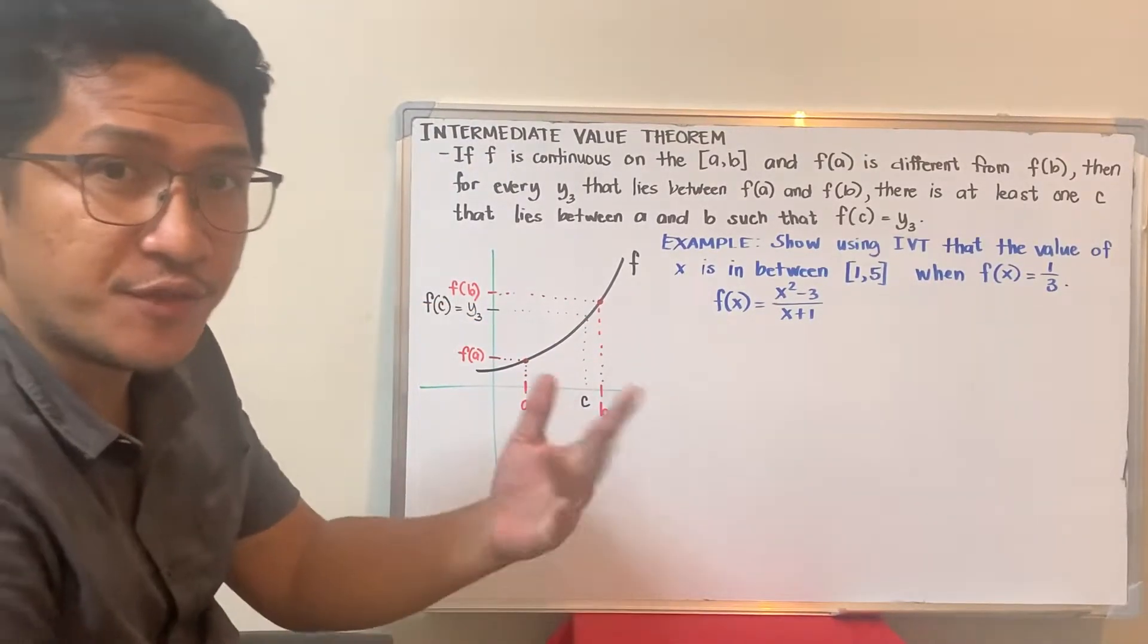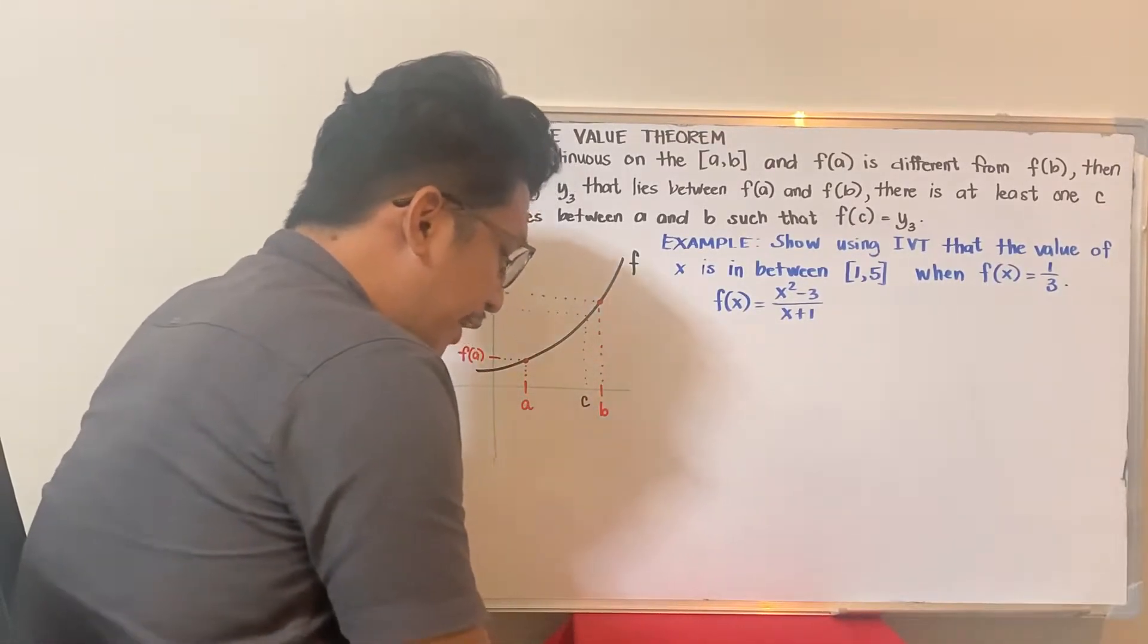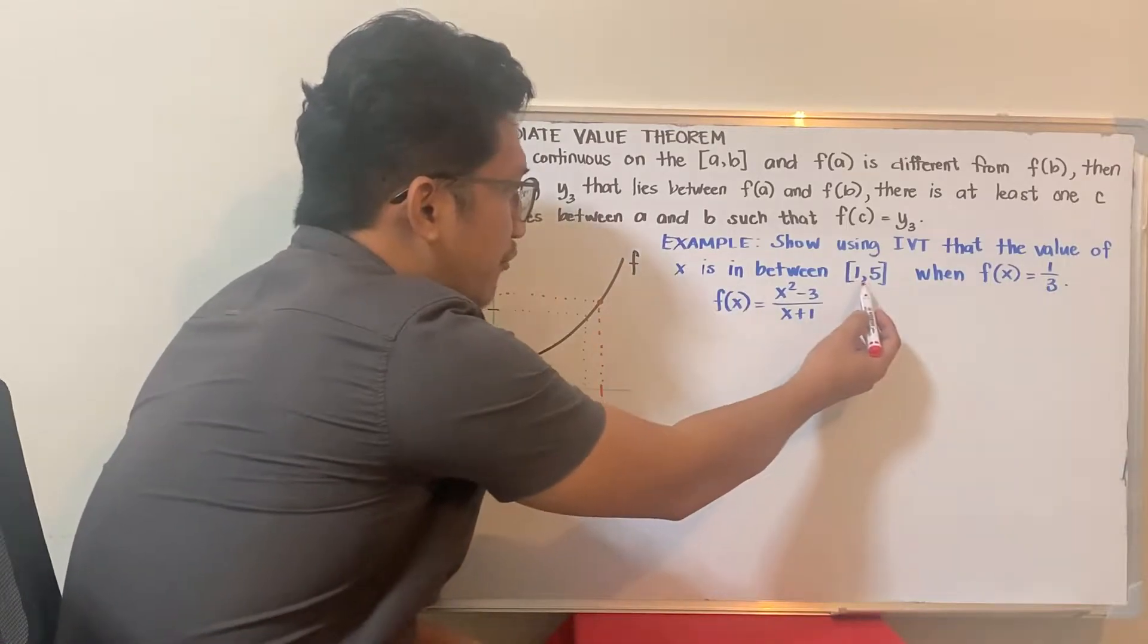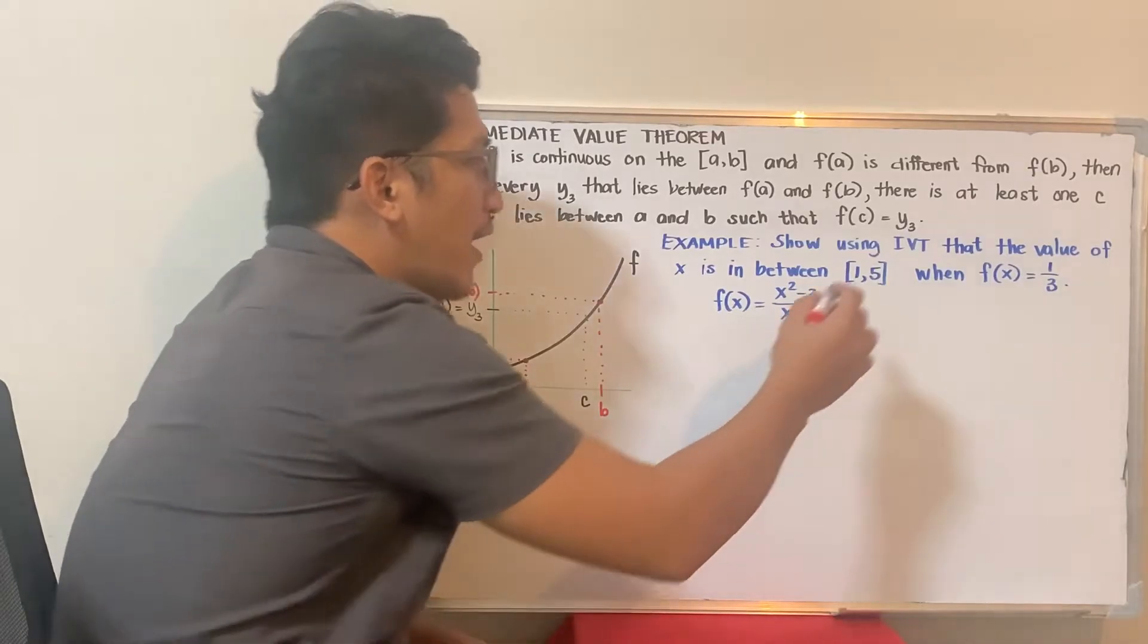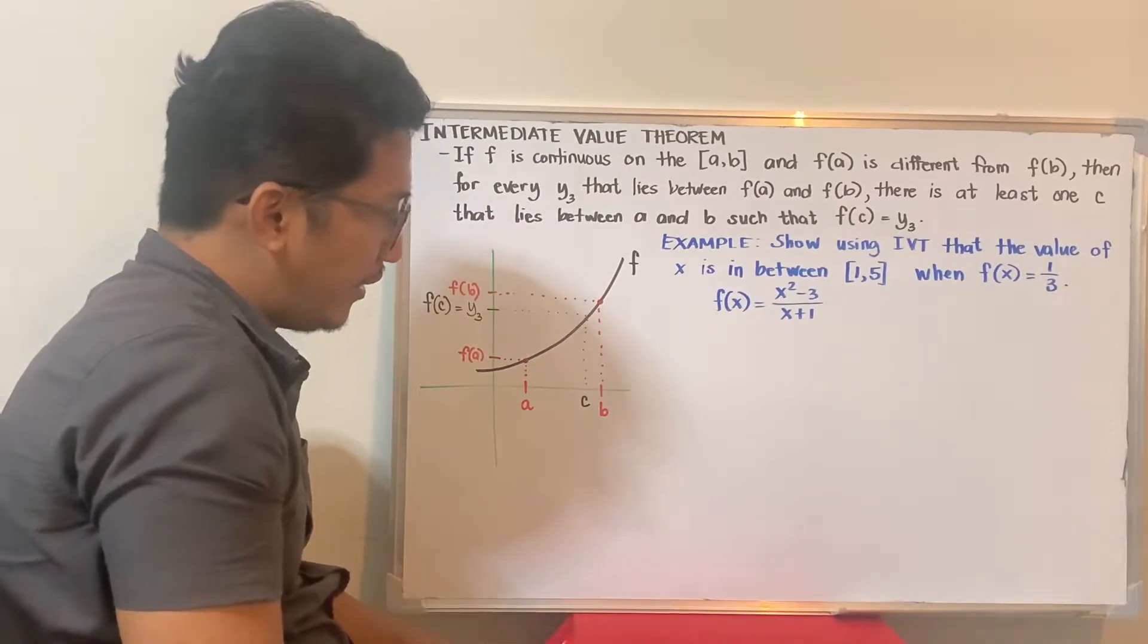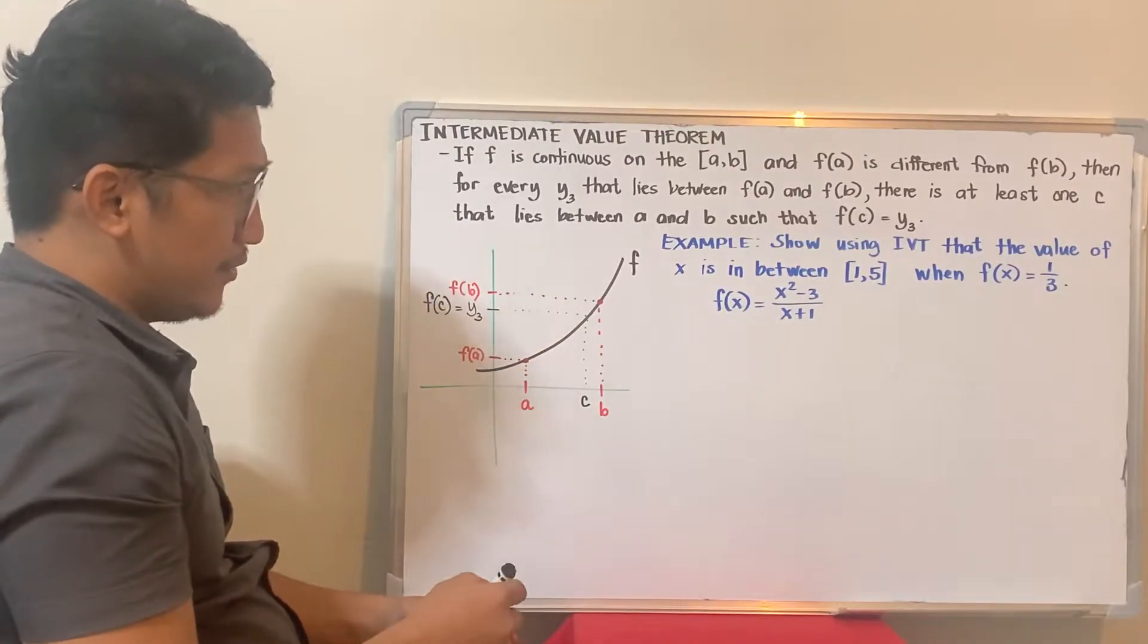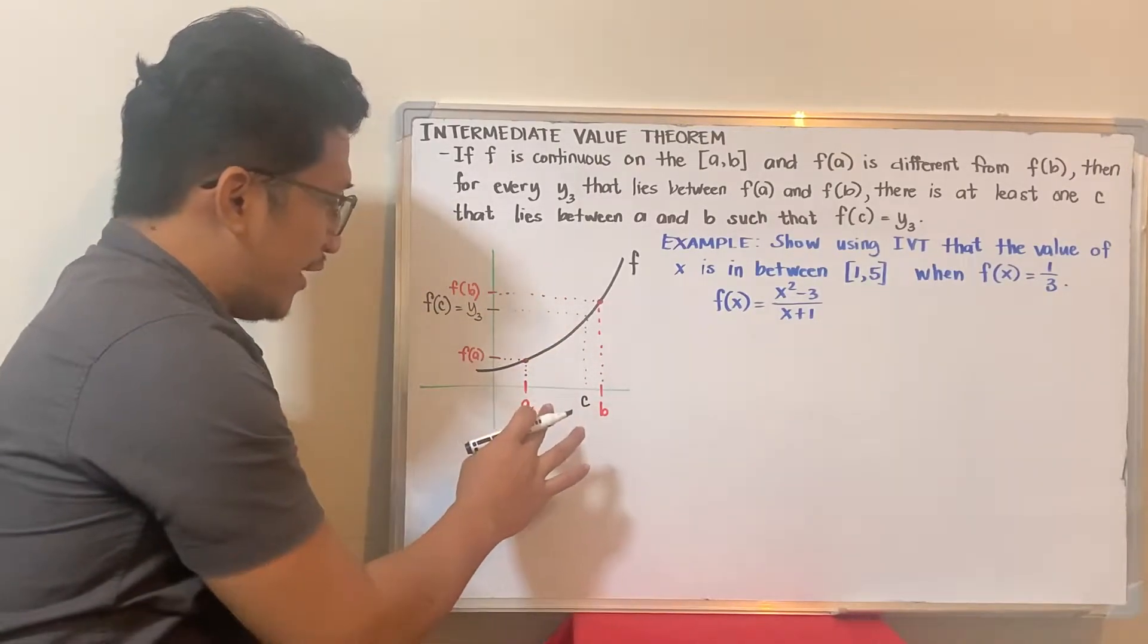I encourage you to watch the first video to relate to this example. Our goal is to show that the value of x is in between 1 and 5 when f of x is equal to 1/3, given this function.